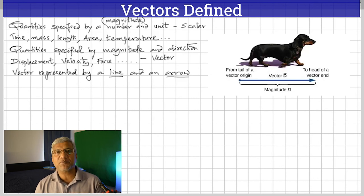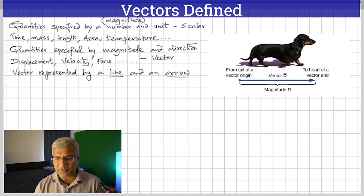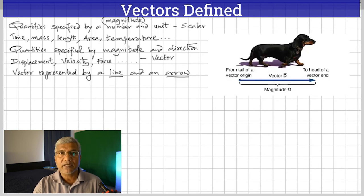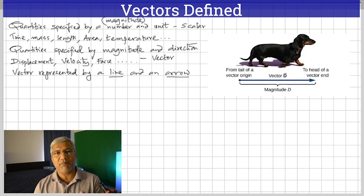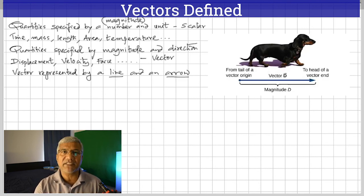Examples of vector quantities include displacement, velocity, acceleration, force, momentum, and so on. A vector quantity is represented by a line and an arrow. The displacement is represented by a line — the length of the line represents the magnitude, so if it's bigger the line would be longer, and the direction is specified by the arrow.